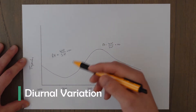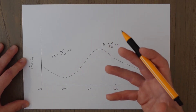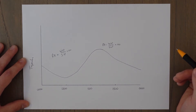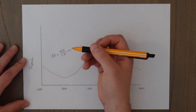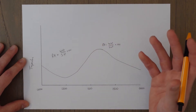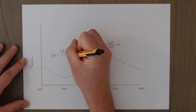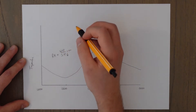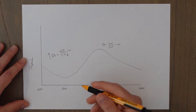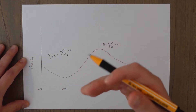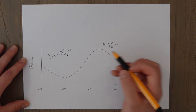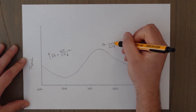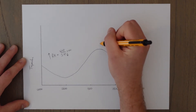Diurnal variation is a fancy way of saying the day-night cycle — the influence of the sun and the heat it gives off in terms of temperature influences the relative humidity. At night when it gets cold, the saturation vapor pressure reduces, because warmer air can hold more water before becoming saturated. So at night, with the same amount of water vapor pressure, we're dividing by a smaller number and the relative humidity goes up. The opposite happens during the day: the saturation vapor pressure goes up as the air heats, we can hold more water, so dividing by a bigger number makes our relative humidity smaller.